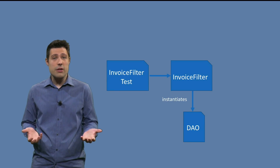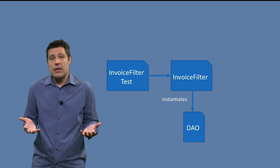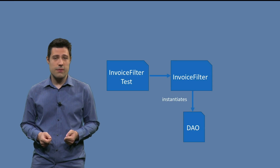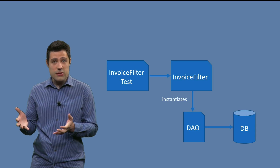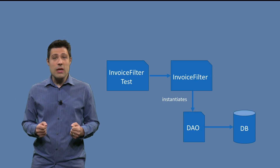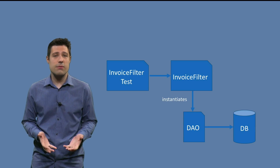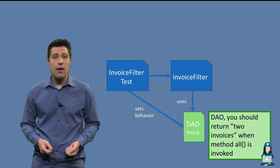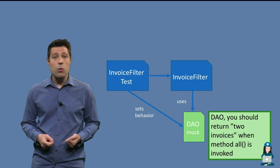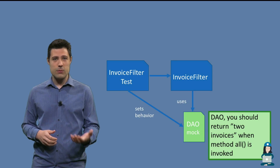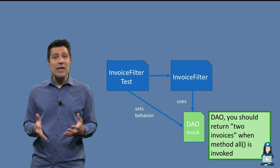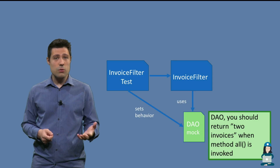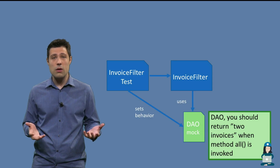In practice, how does it work? We have our production class — in this example, the invoice filter. The invoice filter currently instantiates the data access object, which goes to the database, and that's what we want to avoid. So instead of using the real data access object implementation, we are going to tell the invoice filter to use a simulation — a mocked one. However, mocks never know what to do unless you teach them. We are responsible for setting the expected behavior of this mock, teaching it what to do when its methods are invoked. In this particular test, we should teach the mock to return a list with two invoices when the method 'all' is invoked.